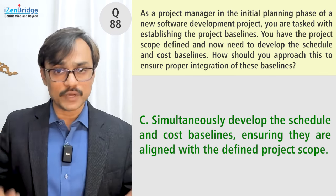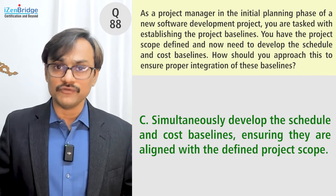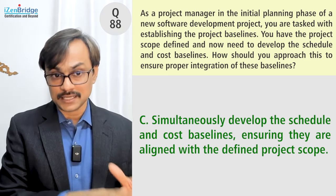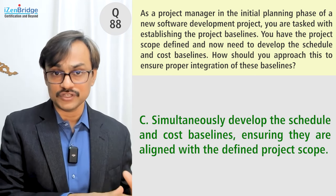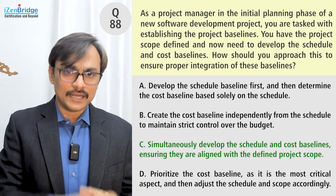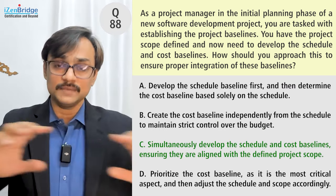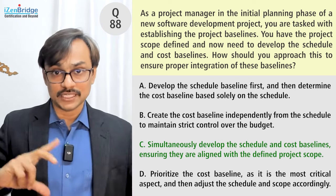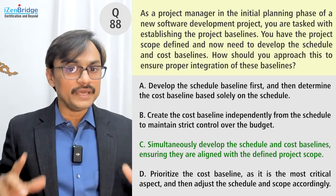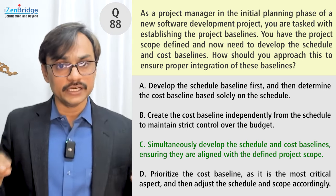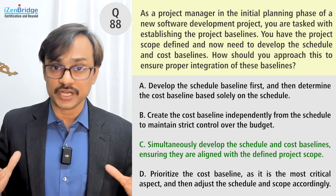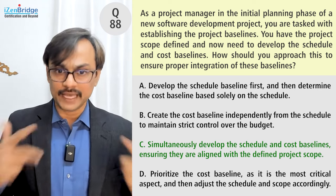The question talks about having scope identified and moving toward scheduling and costing. It's not suggesting a fixed-budget or fixed-capacity format with flexible scope. That's why I'm taking a predictive approach and focusing on Option C — working on schedule and cost simultaneously, treating scope as fixed and not constantly negotiable. In the real exam, predictive versus adaptive thinking can sometimes give different answers, so revisit the question for clear context clues.